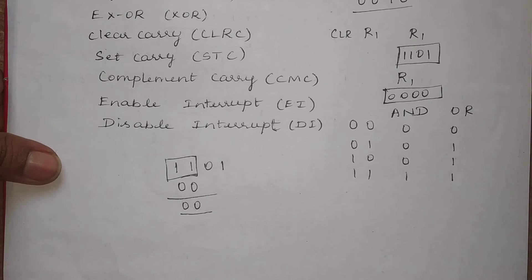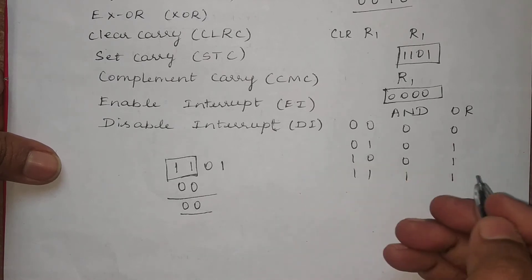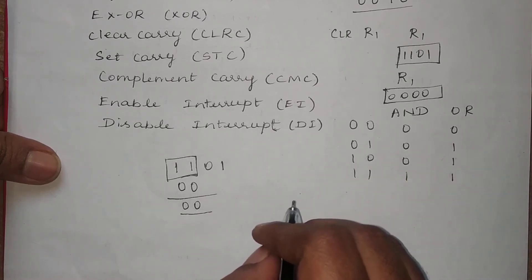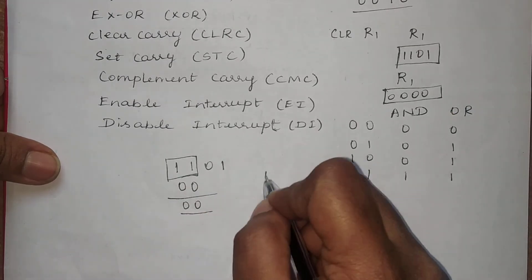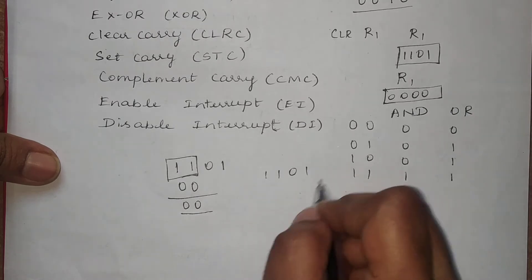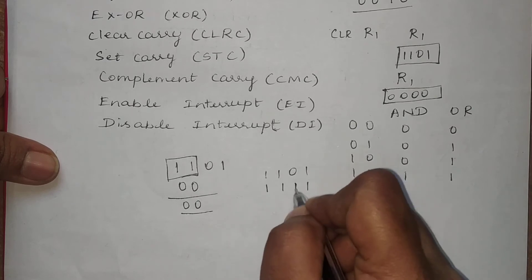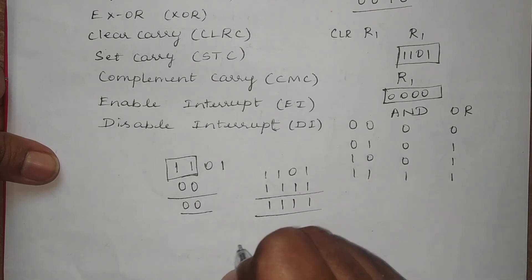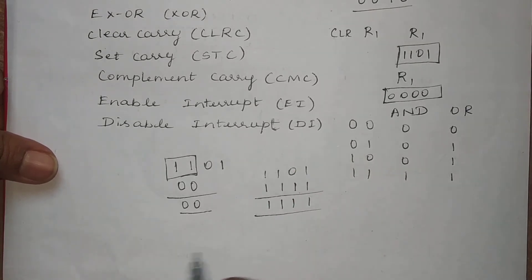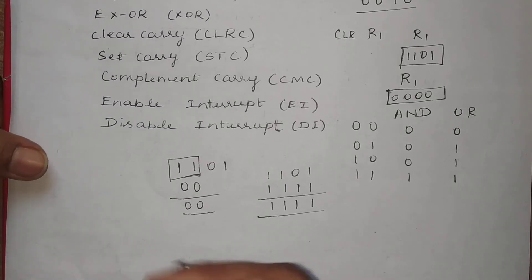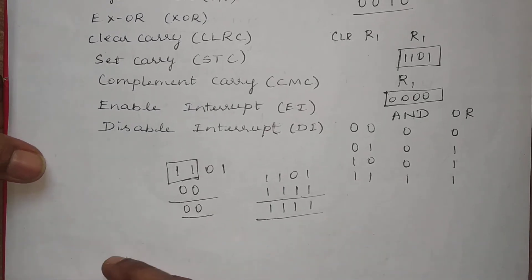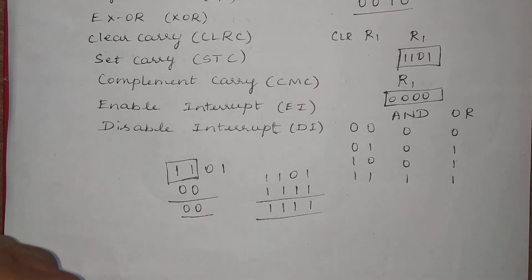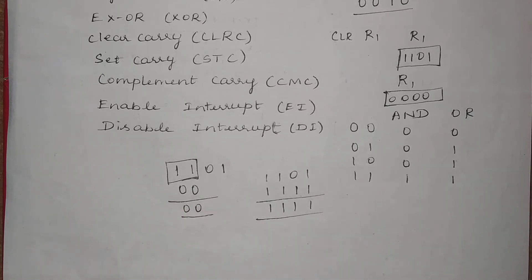Now if you want to set some part of the data to 1, you need to perform the OR operation, using 1 as the corresponding bits of the second data. For example, if you perform OR with all 1s, then all 4 bits of the result will become 1. This is how logical AND and logical OR instructions can be used in many places, for example in networking and subnet masking.